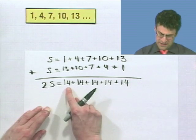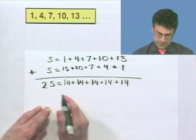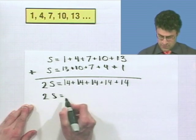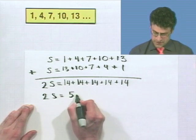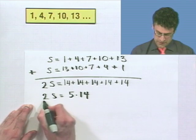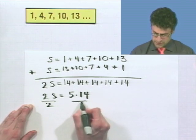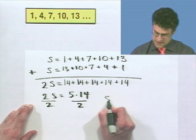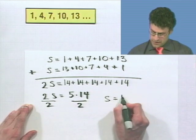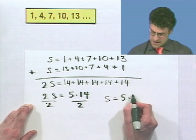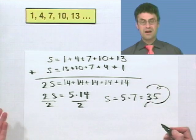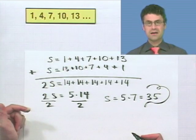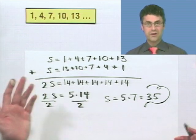1 plus 13 is 14, 4 plus 10 is 14, 7 plus 7 is 14. Isn't this amazing? 10 plus 4 is 14, and 13 plus 1 is 14. It's remarkable. So how many 14s do we have? 1, 2, 3, 4, 5. We have 5. So 2S equals 14 times 5, or 5 times 14. Divide both sides by 2. And I see that S is equal to 5 times 7, which equals 35. So the sum of the first five numbers of this arithmetic sequence is actually 35. And we did it without actually adding them all up, but we used this great trick.